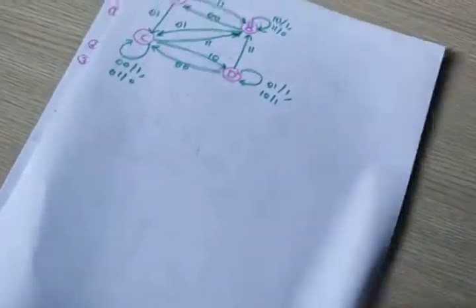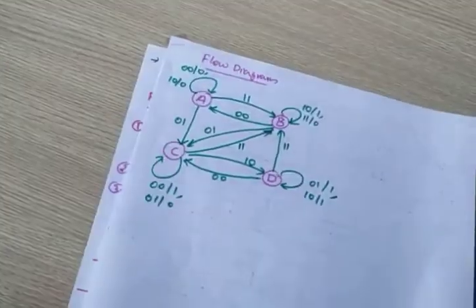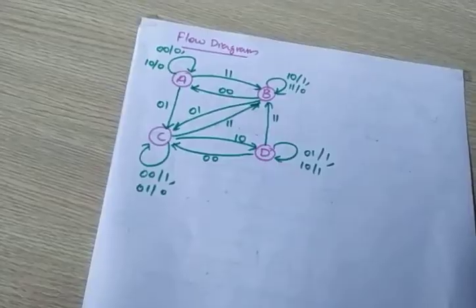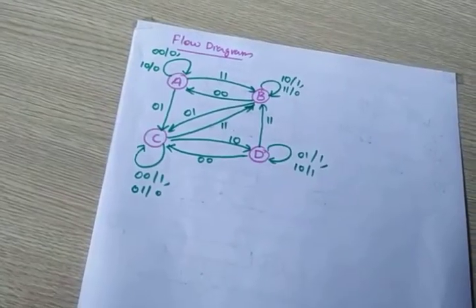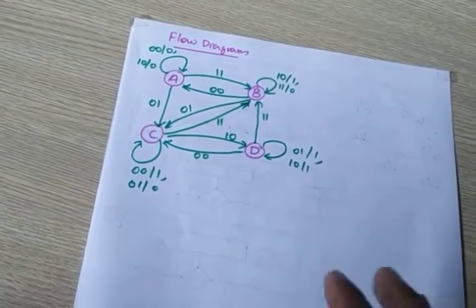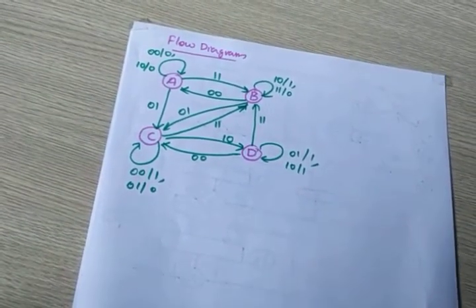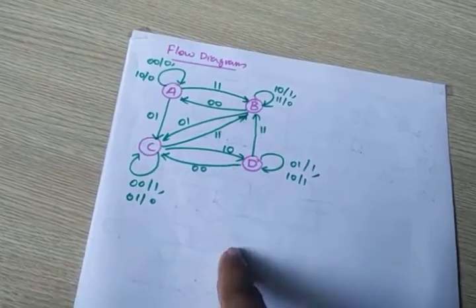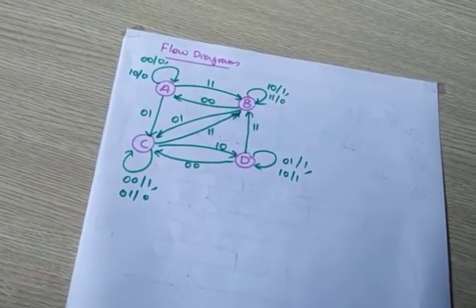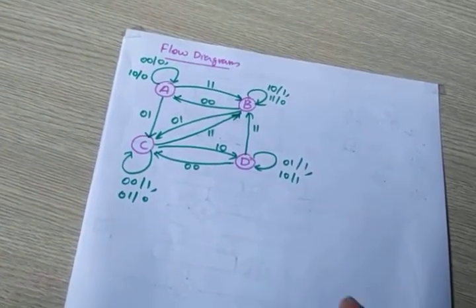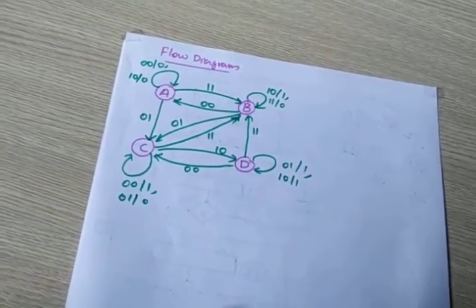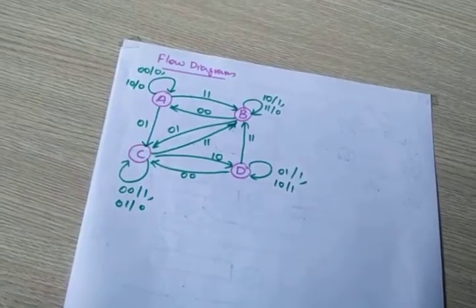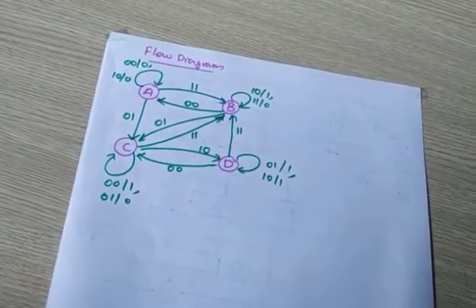That's about the asynchronous sequential circuit. This is the complete procedure for designing. You have to follow these steps and finally draw the flow table. If a question asks you to analyze the asynchronous sequential circuit, follow all these steps and draw the flow table.